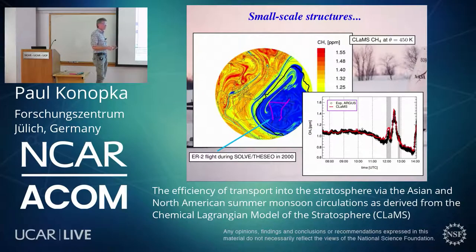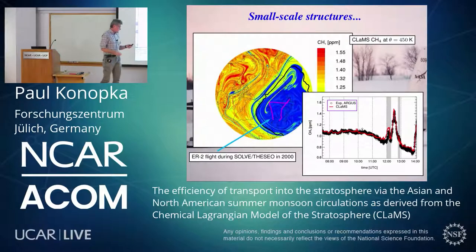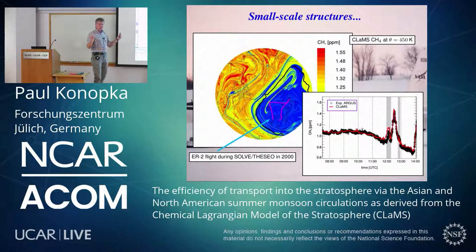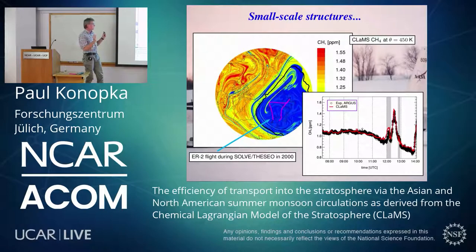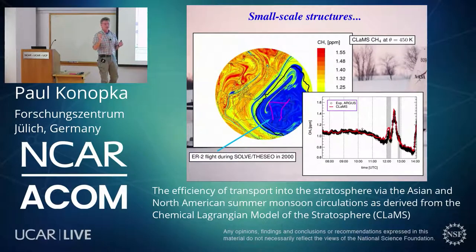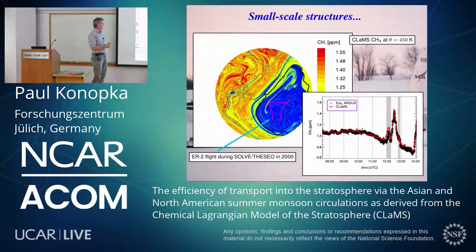This was our kind of starting point for the applications which followed. I will not talk too much about the chemistry — chemistry is also a big part of the model. Jens-Uwe Gross and Rolf Miller are very concerned with the chemistry, especially for the polar vortex. I will concentrate mainly on the long-term simulations with CLAMS and on the application for the Asian monsoon.